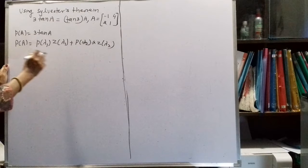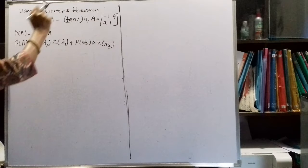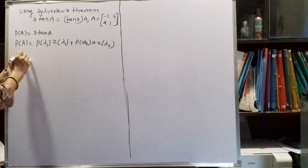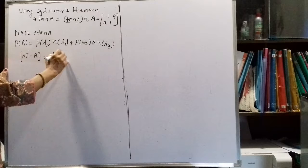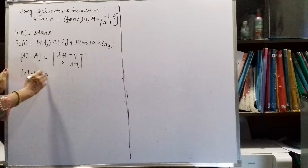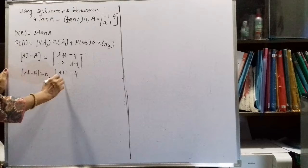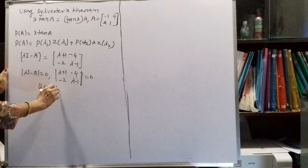P(A) is 3·tan(A), so we first need to find λ₁ and λ₂, the eigenvalues of matrix A. For that, we know that |λI − A| = 0 is the characteristic equation. The matrix λI − A gives entries (λ+1), −4, −2, and (λ−1).